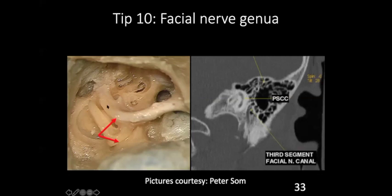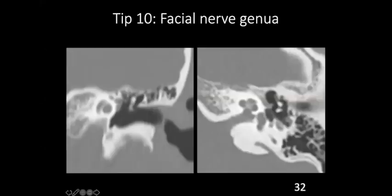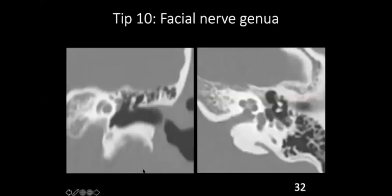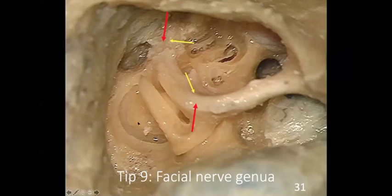This dissection picture shows the horizontal part of the facial nerve, the second genu, and the vertical part. The posterior semicircular canal and second genu and vertical part are more or less at the same level — the same coronal plane. You can see here: this is the posterior semicircular canal, and this is the third part of the facial nerve and second genu. That relationship you should remember.